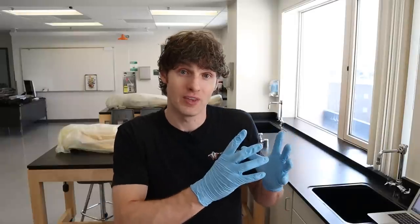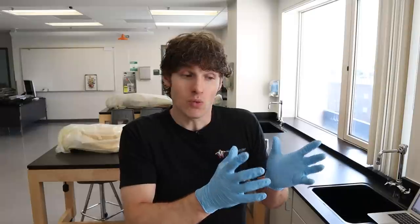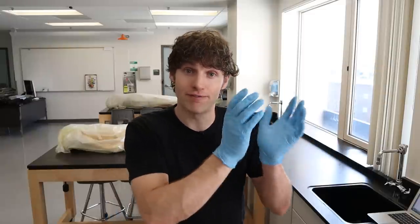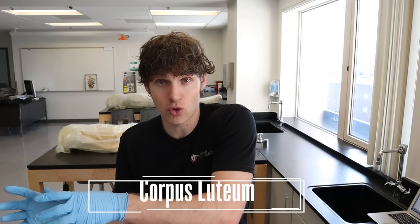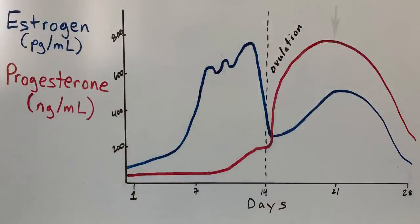Remember that dominant follicle that opened up and released the egg from the ovary — what becomes of it? The follicle released the egg because luteinizing hormone spiked, and LH also causes the conversion of that follicle into a structure called the corpus luteum. Corpus means body, luteum means yellow, because they looked like little yellow bodies under the microscope. This corpus luteum secretes a high amount of progesterone, and estrogen is released as well, but not as much as the progesterone.